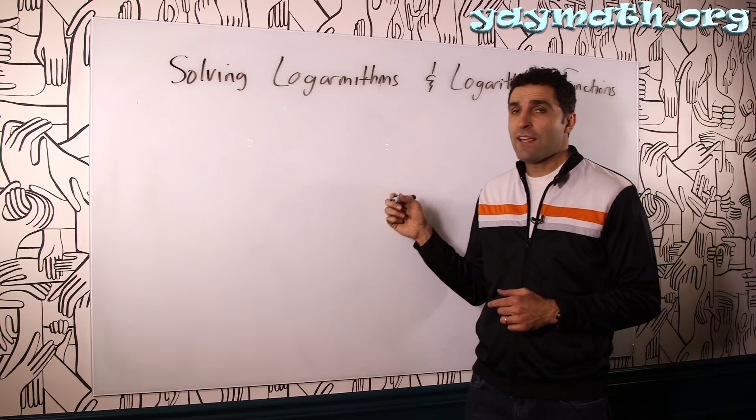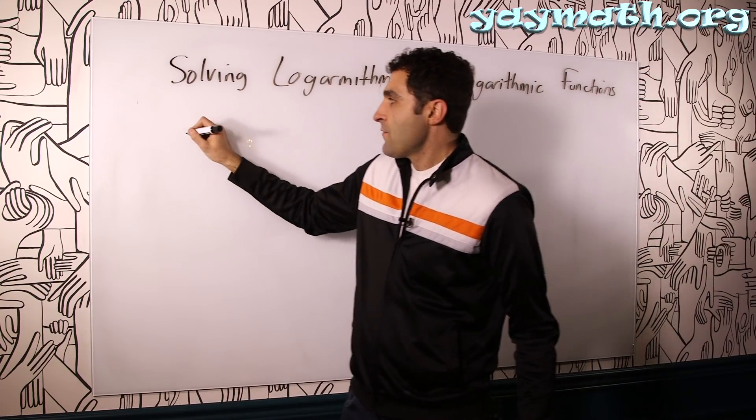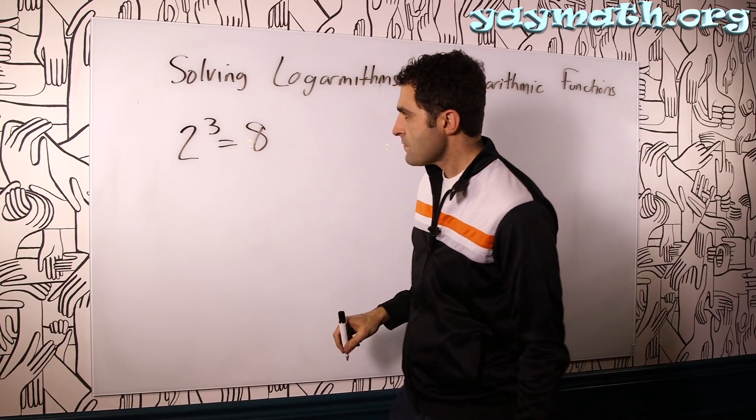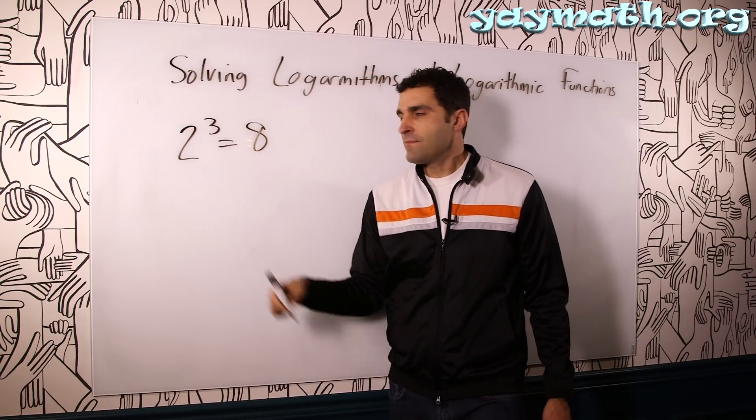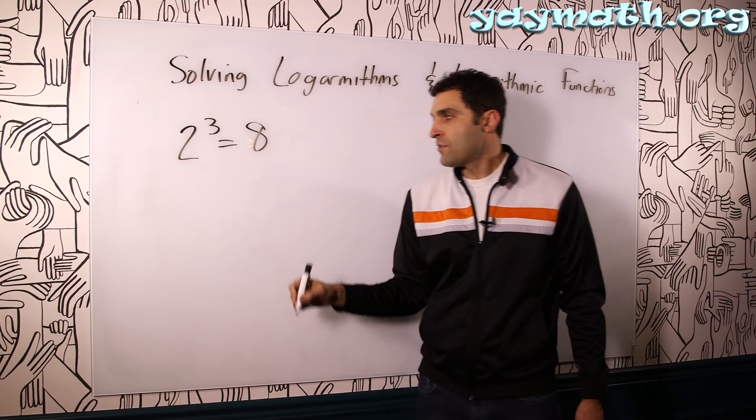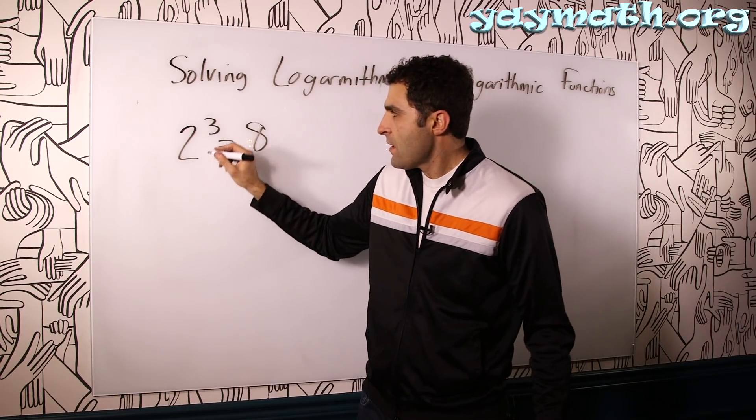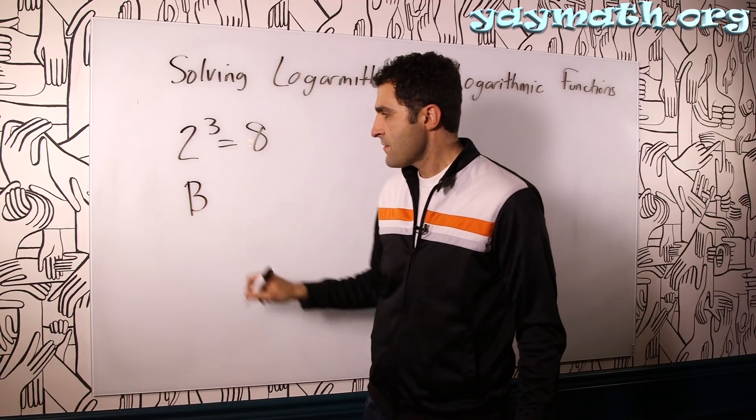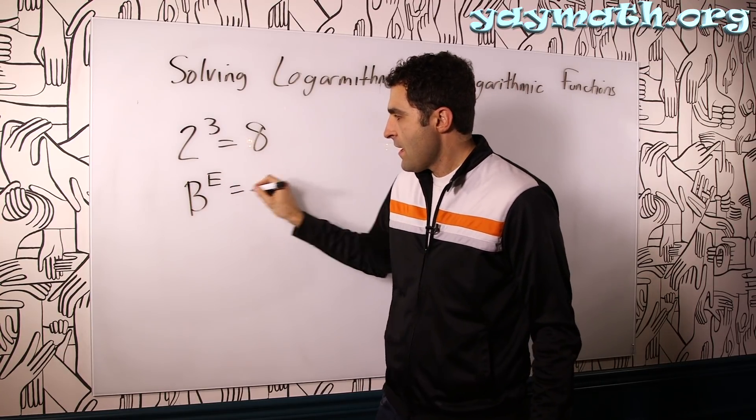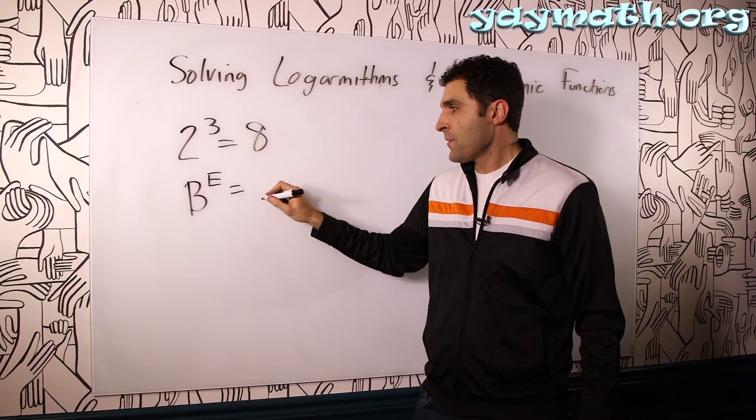So first we have to understand what a log is. First let's talk this. This is a true statement: 2 to the third equals 8. 2 times 2 times 2 is 8. So let's talk about it. The 2 we could call the base number. The 3 is the exponent. And it results in a certain number. We can call that n.